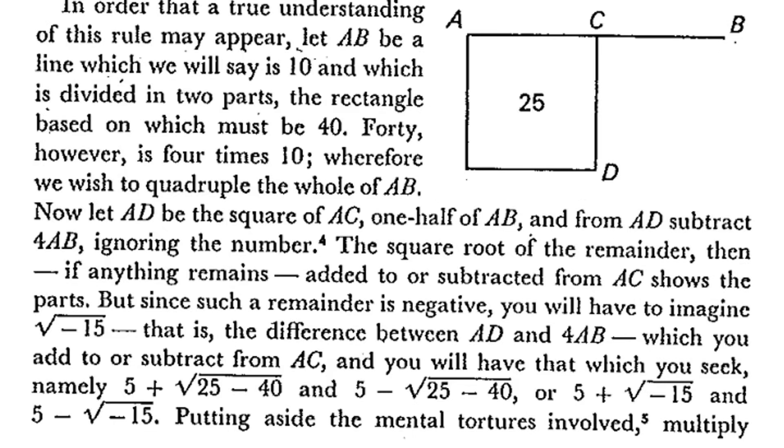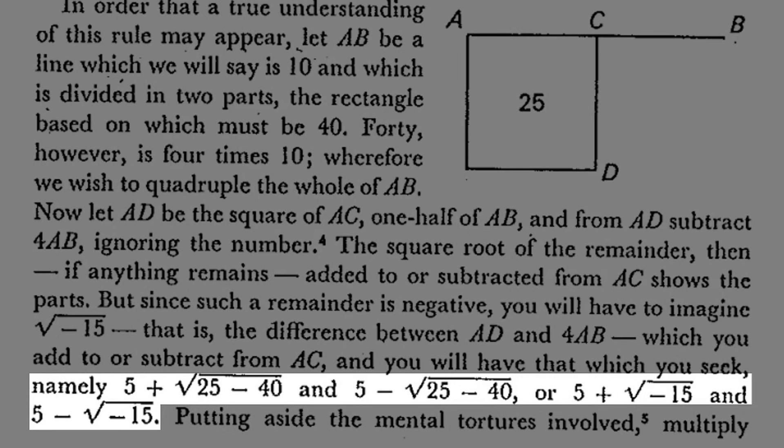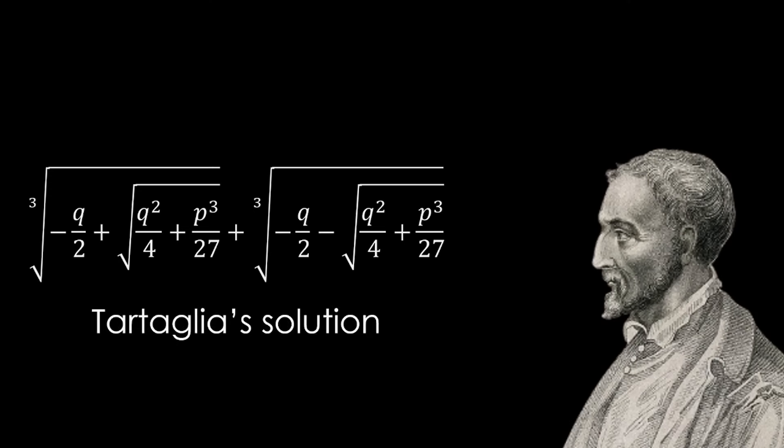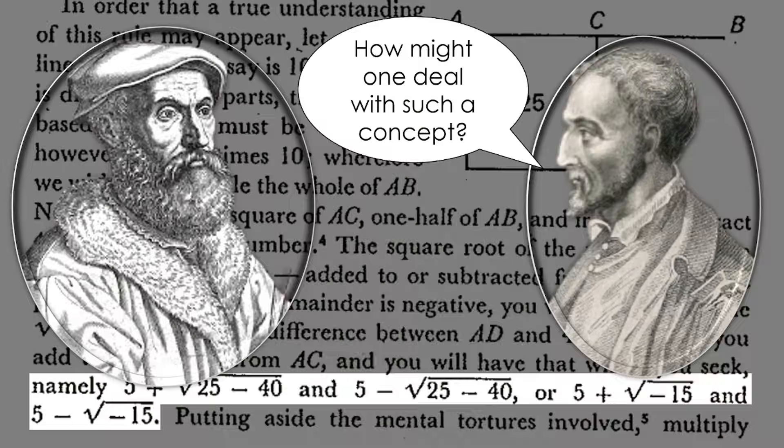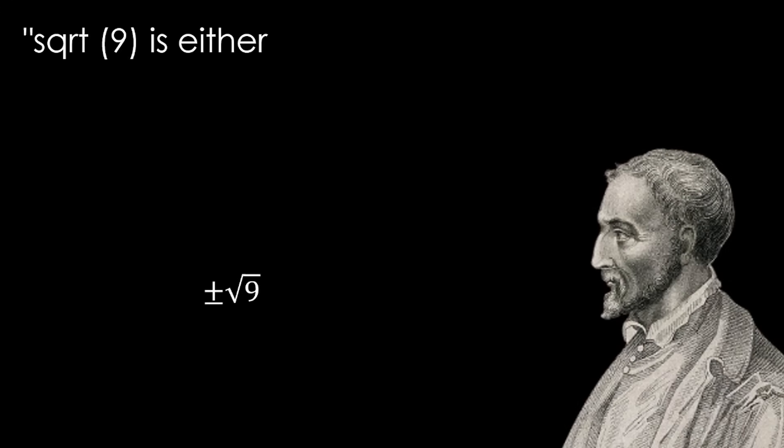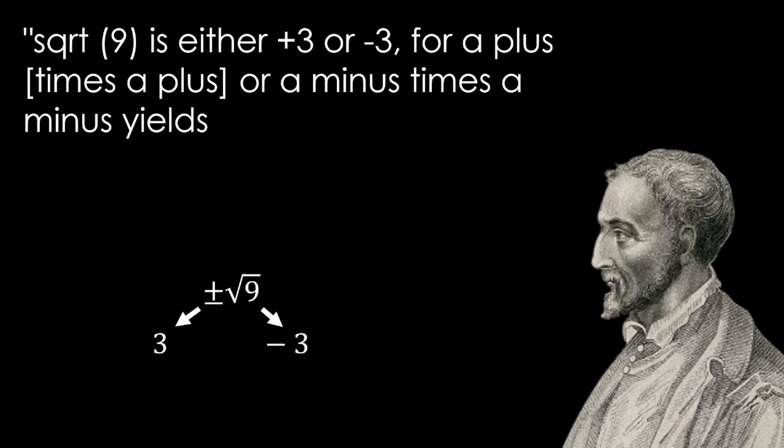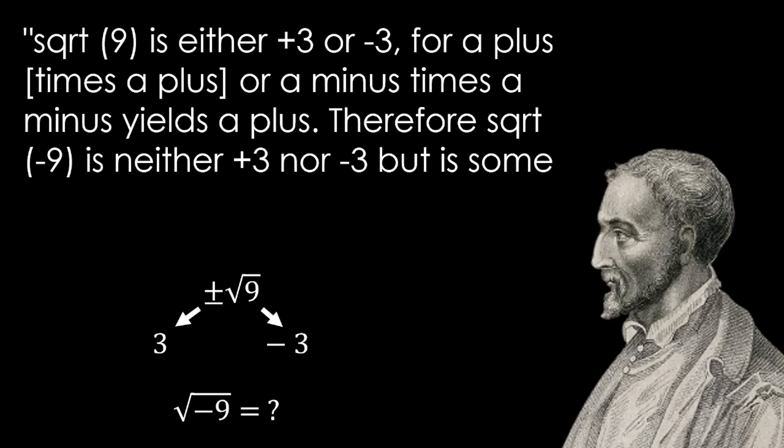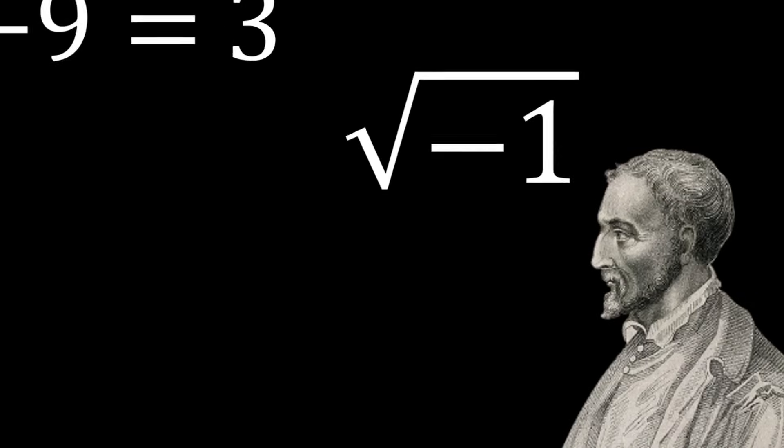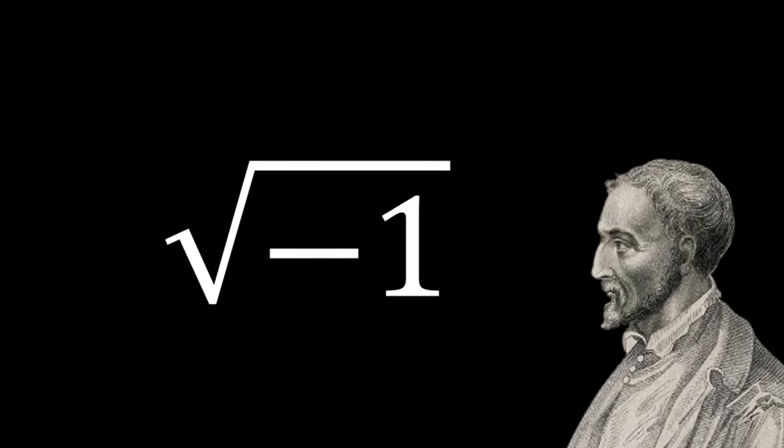During the writing of his book, Cardano would encounter many equations involving negative square roots. He would try to ask Tartaglia about it. However, still being upset about the betrayal, Tartaglia mocked Cardano for not understanding it, despite being unable to solve it himself. Cardano states that square root of 9 is either plus 3 or minus 3, for a plus times a plus or a minus times a minus yields a plus. Therefore, square root of 9 is neither plus 3 nor minus 3, but is some recondite third sort of thing. The recondite third Cardano mentions in this quote is what we know today as the imaginary unit.